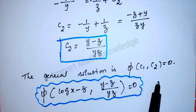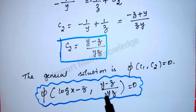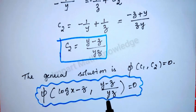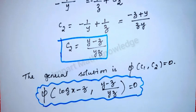The general solution is φ(c1, c2) = 0, where c1 = log x − z and c2 = (y − z)/(yz), which equals zero.